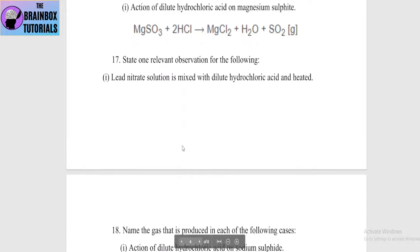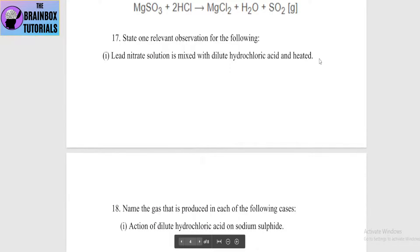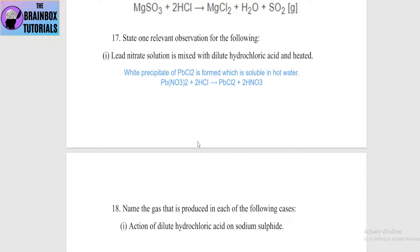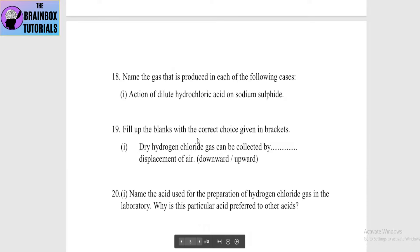Next: state the relevant observation for the following — lead nitrate solution is mixed with dilute hydrochloric acid and heated. We see a white precipitate of lead chloride (PbCl2) which is soluble in hot water. The reaction: Pb(NO3)2 + 2HCl → PbCl2 + 2HNO3.